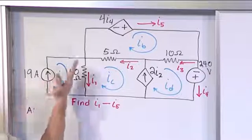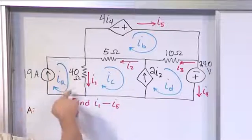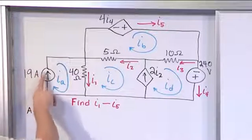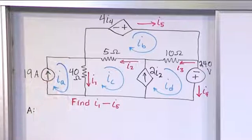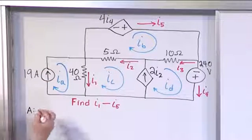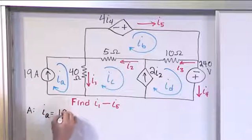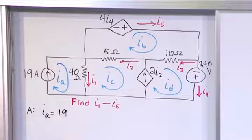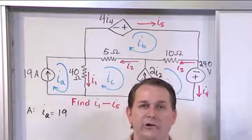Look, this is a current source on the outside boundary of a mesh. So I sub A, which is circulating here, is going in the same direction as this 19 amp source. So I sub A is actually equal to 19 amps. So literally you can write down for your first mesh current equation, I sub A is equal to 19. It's a fact. It's given to you in your drawing. It would be the equivalent of basically drawing all of your mesh current.